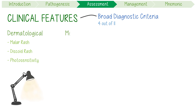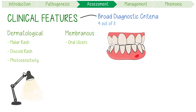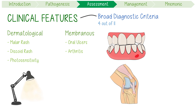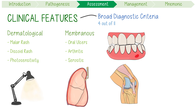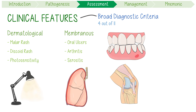There are three membranous issues: oral ulcers, which are usually painless; arthritis, which is non-erosive; and serositis, which is typically inflammation of the pericardium or the lung linings, resulting in pleurisy.